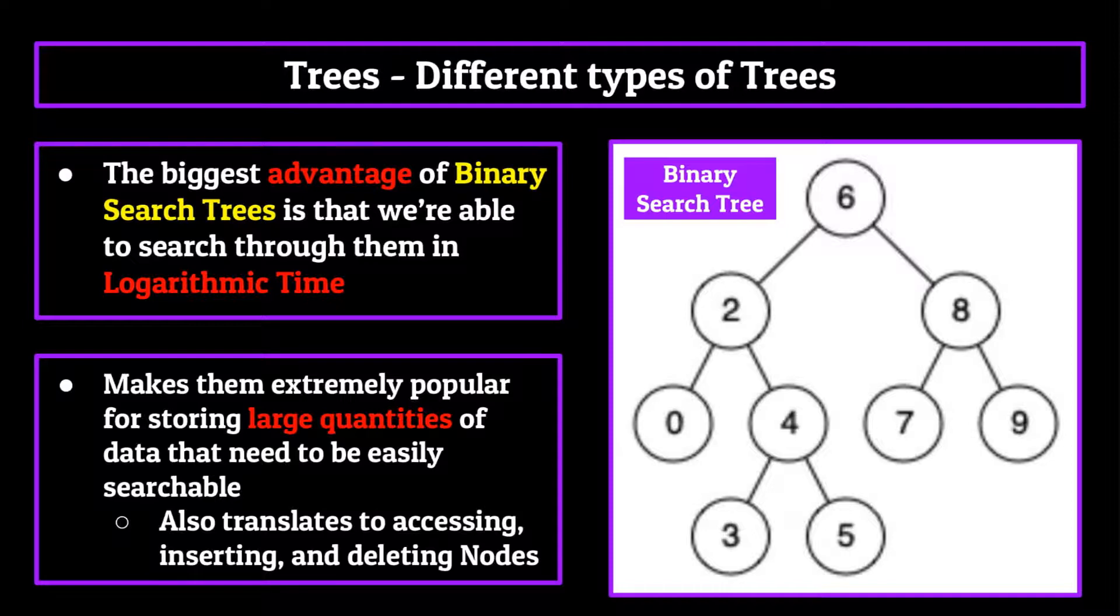This makes binary search trees really popular for storing large quantities of data that need to be easily searchable. Of course, this also translates to inserting, deleting, and accessing elements within the data structure. But for the most part, searching efficiency is what really sets the binary search tree apart from the rest.